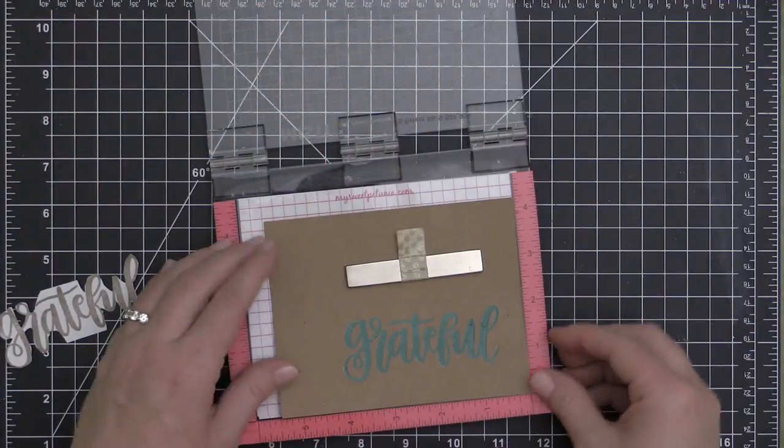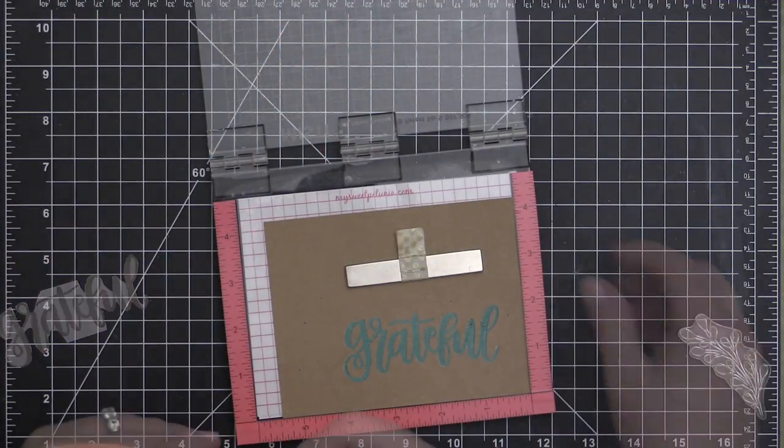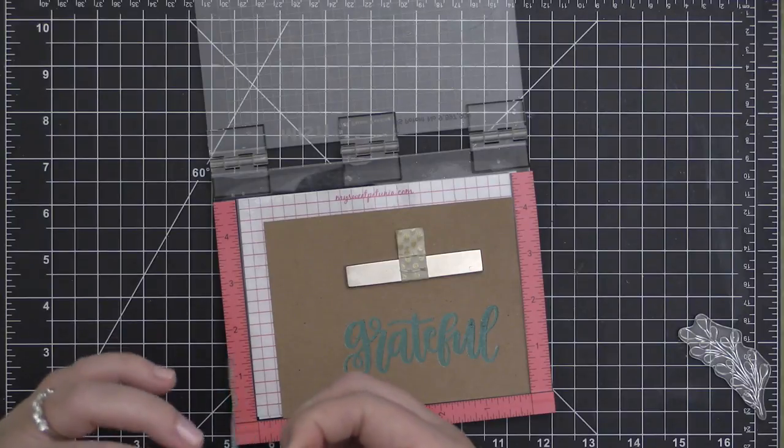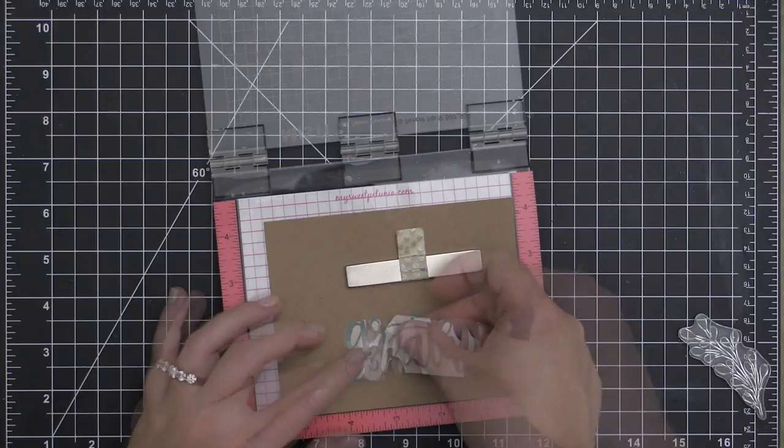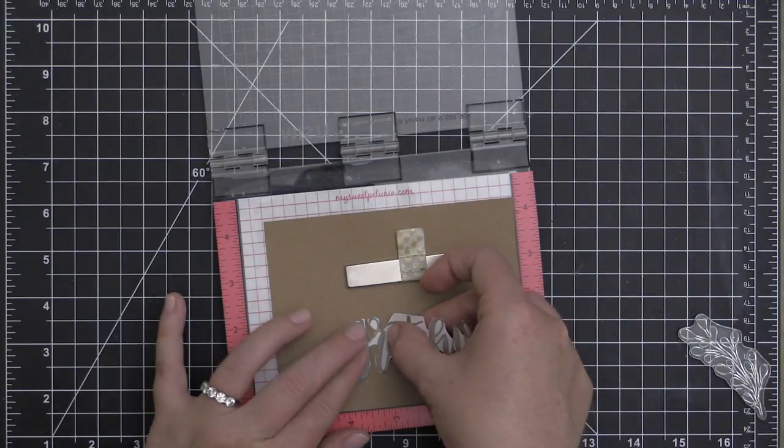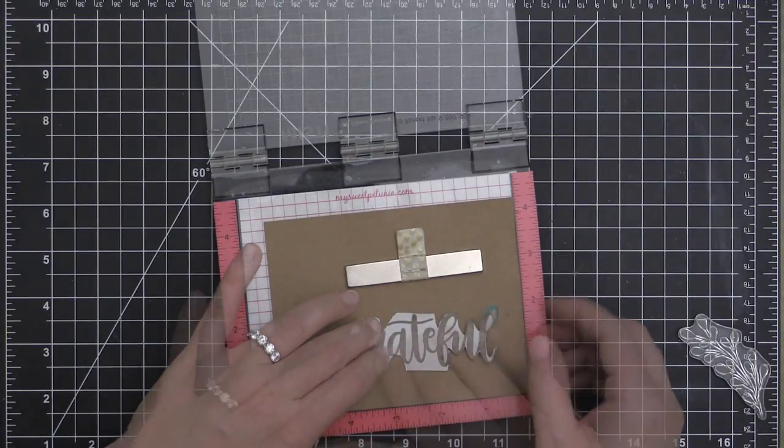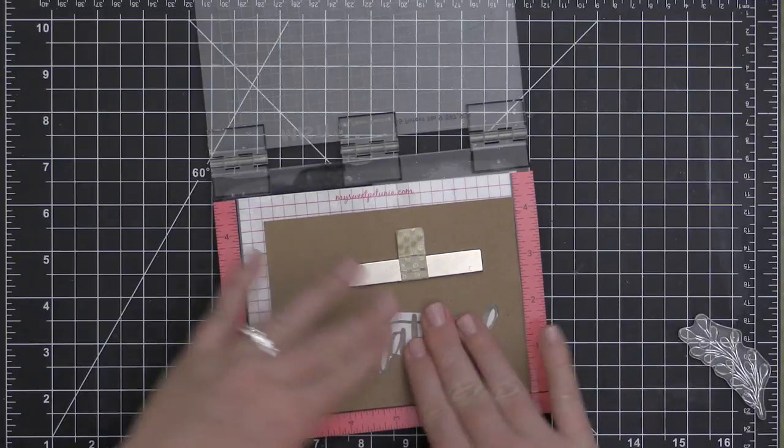The MISTI stamping tool is great because I can just put it right back in at that corner and I know that my cardstock is going to be perfectly lined up to stamp right on top of the previous image.